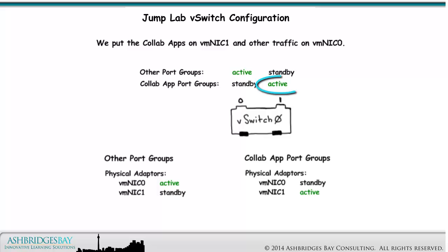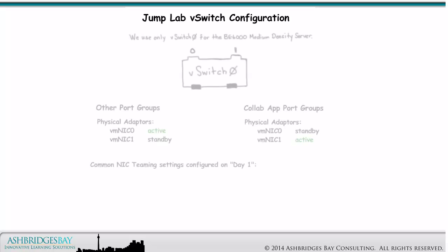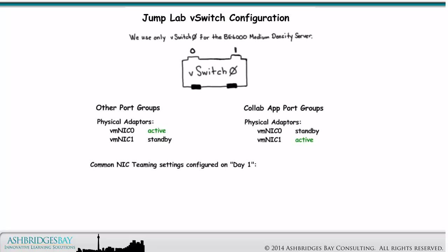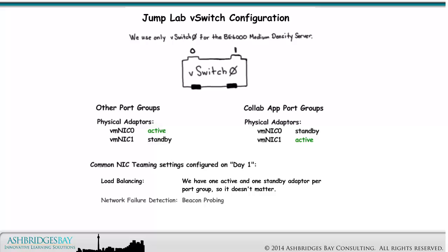We put the Collab apps on VM NIC 1 and other traffic on VM NIC 0. In this way, we isolate the collaboration traffic from VM kernel traffic and other traffic, while also providing redundant uplinks. Here are the common NIC teaming settings we configured in Day 1. Load Balancing: this setting doesn't matter because we have only one active adapter per port group. Network Failover Detection: set this to Beacon Probing. Notify Switches: set this to Yes. And Failback: Enterprise 20 sets this to No.